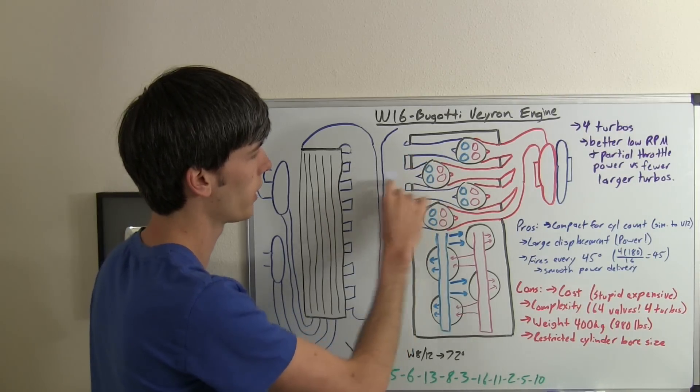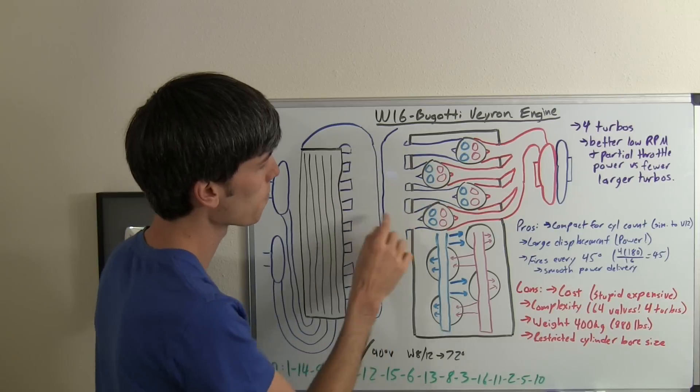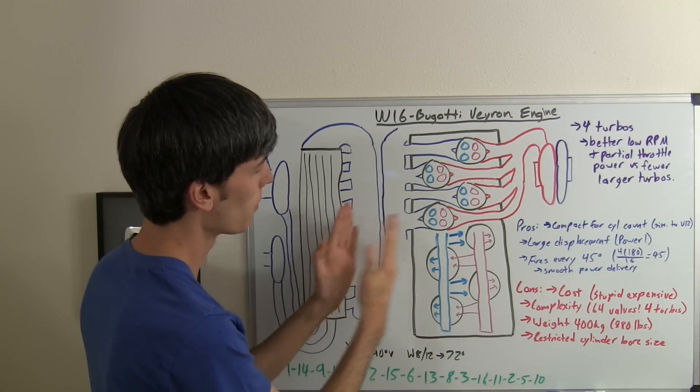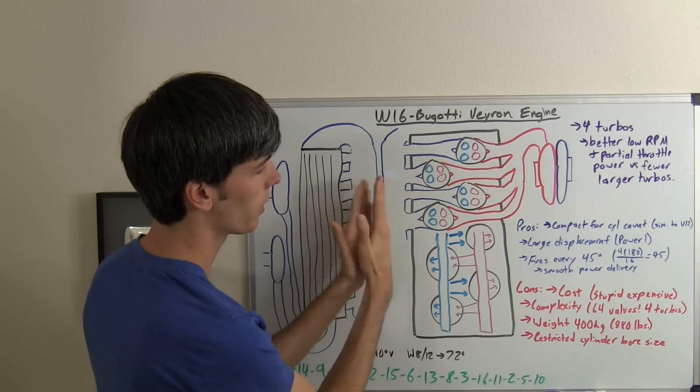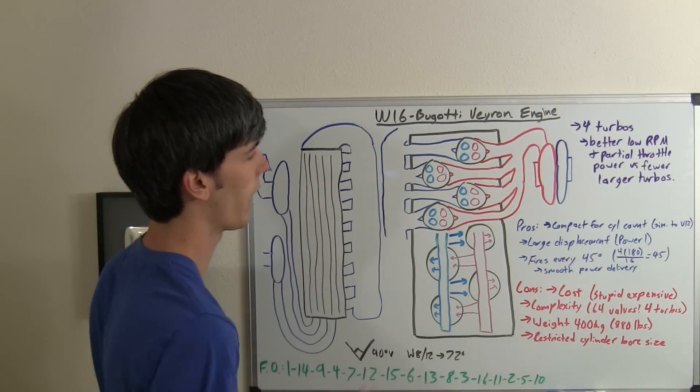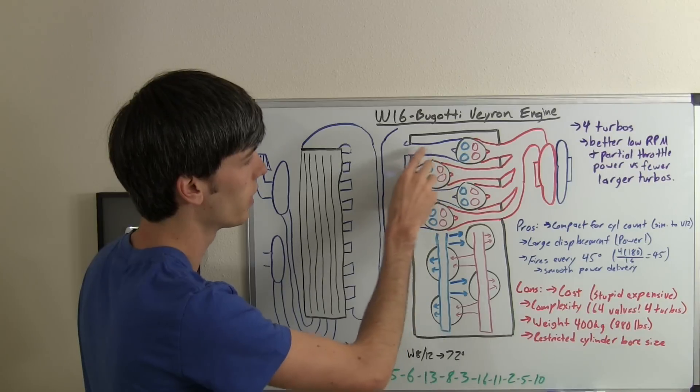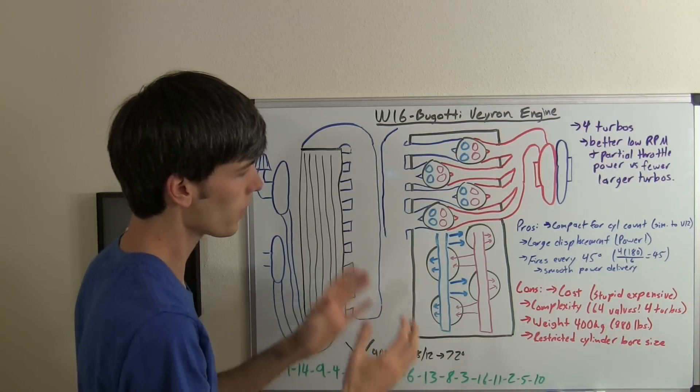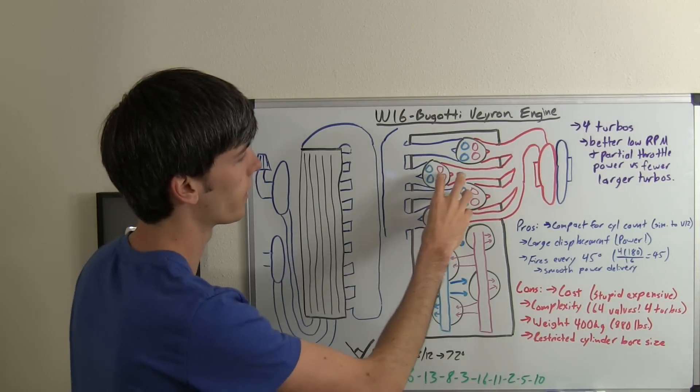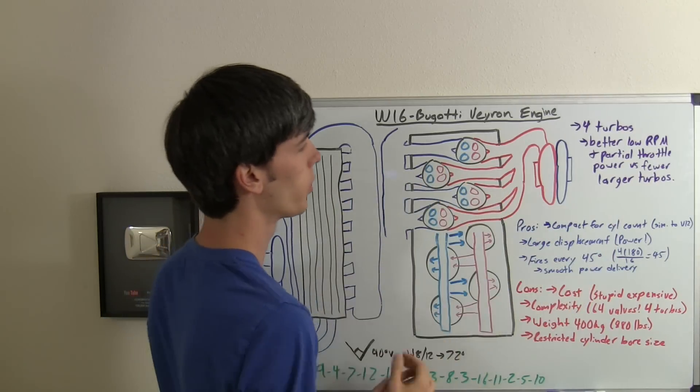So the air fuel mixture comes in, and this VR8 is staggered, but all eight intakes come in on the left side and all the exhausts exit on the right side. So all that air comes in, moves into the cylinder, then you have your combustion occur, and then all of the exhaust moves out the right side.